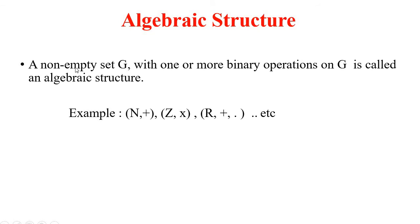Algebraic structure: a non-empty set G with one or more binary operations on G is called an algebraic structure. For example, the natural numbers with respect to addition, integers with respect to multiplication, and the set of real numbers R with two binary operations — addition and multiplication — are all algebraic structures.